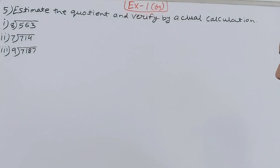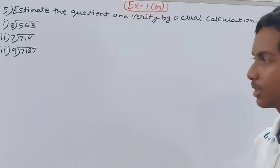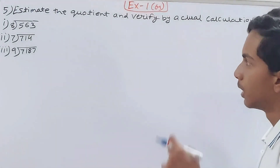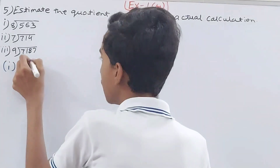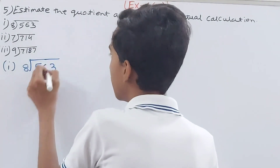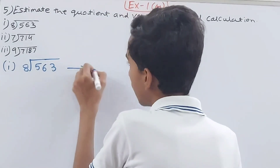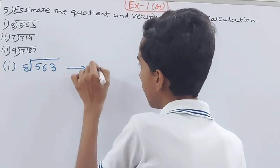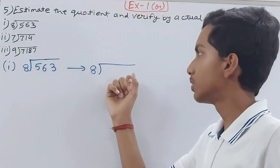So we have to estimate the quotient and verify by actual calculation. First we will divide and find the estimated quotient. We have 8 and 563 here. We will estimate this — so 800 and 563. We need to do something so that it becomes divisible by 8.